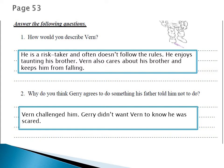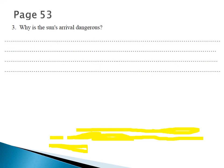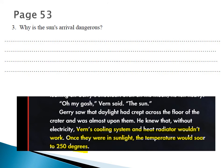You can pause this video now and write these answers in your sheet with very good handwriting. Moving on to number three on the same page: why is the sun's arrival dangerous? Why is it very dangerous when the sun rises on the moon? We can find the answer in our textbook.